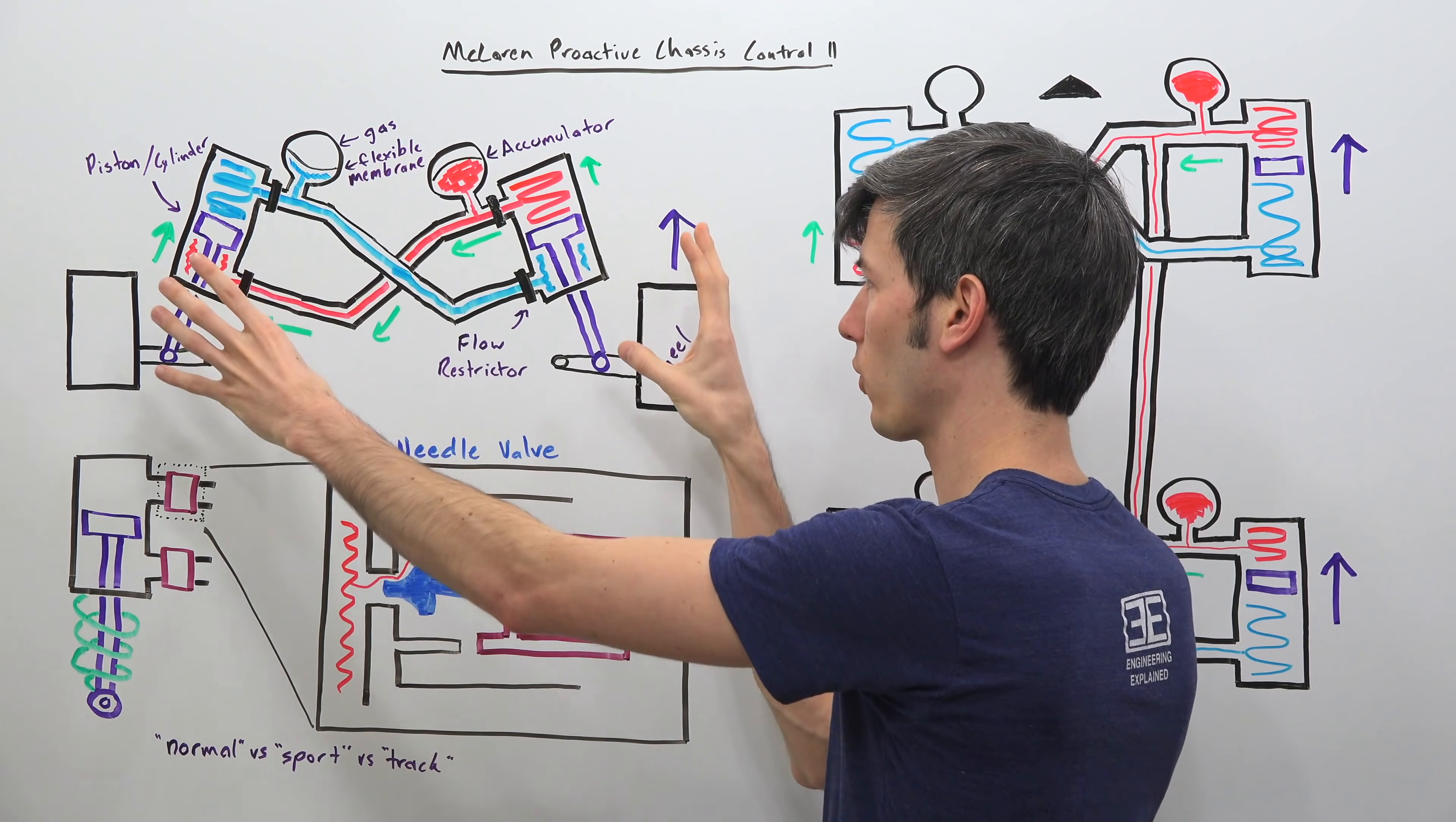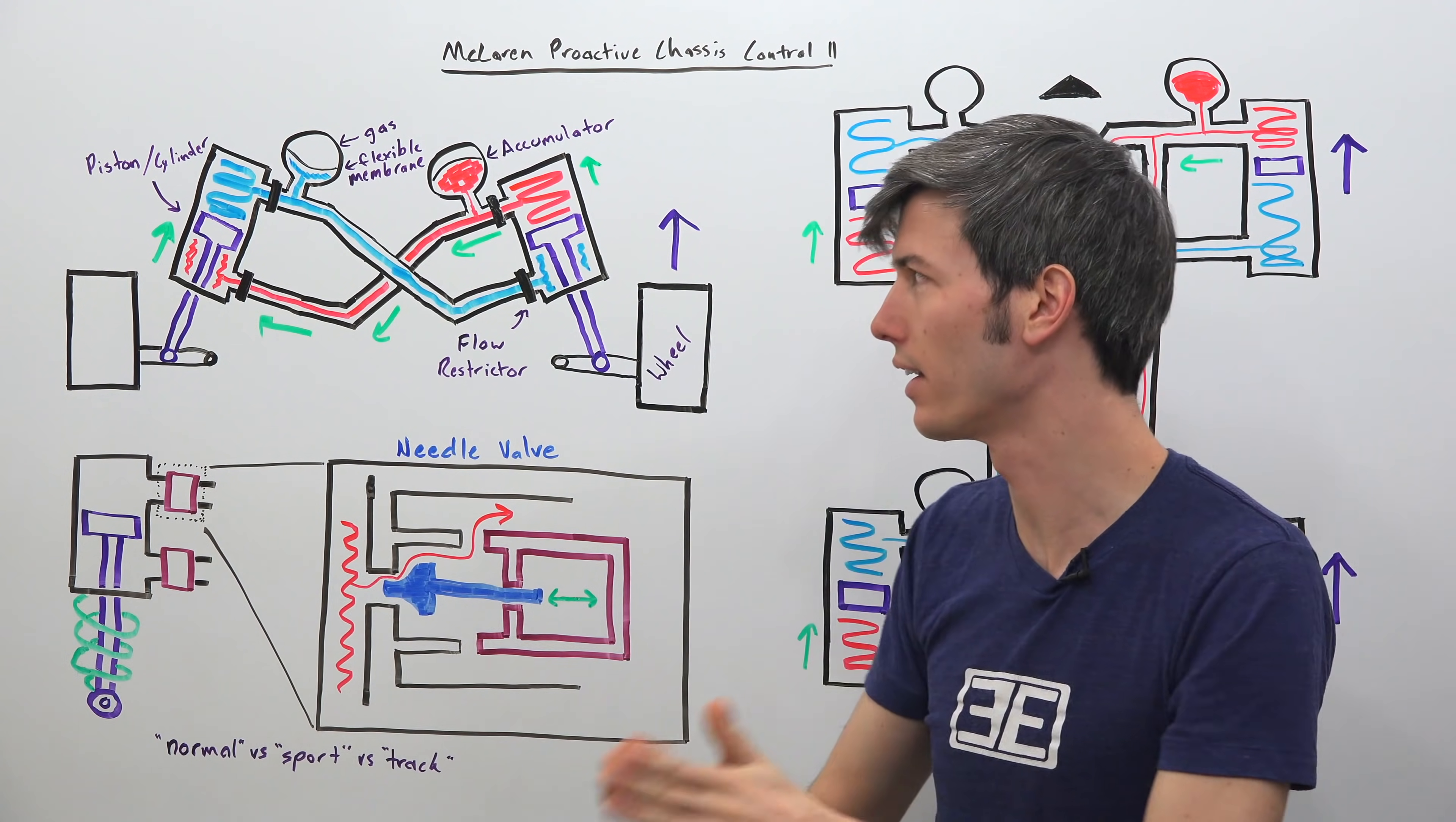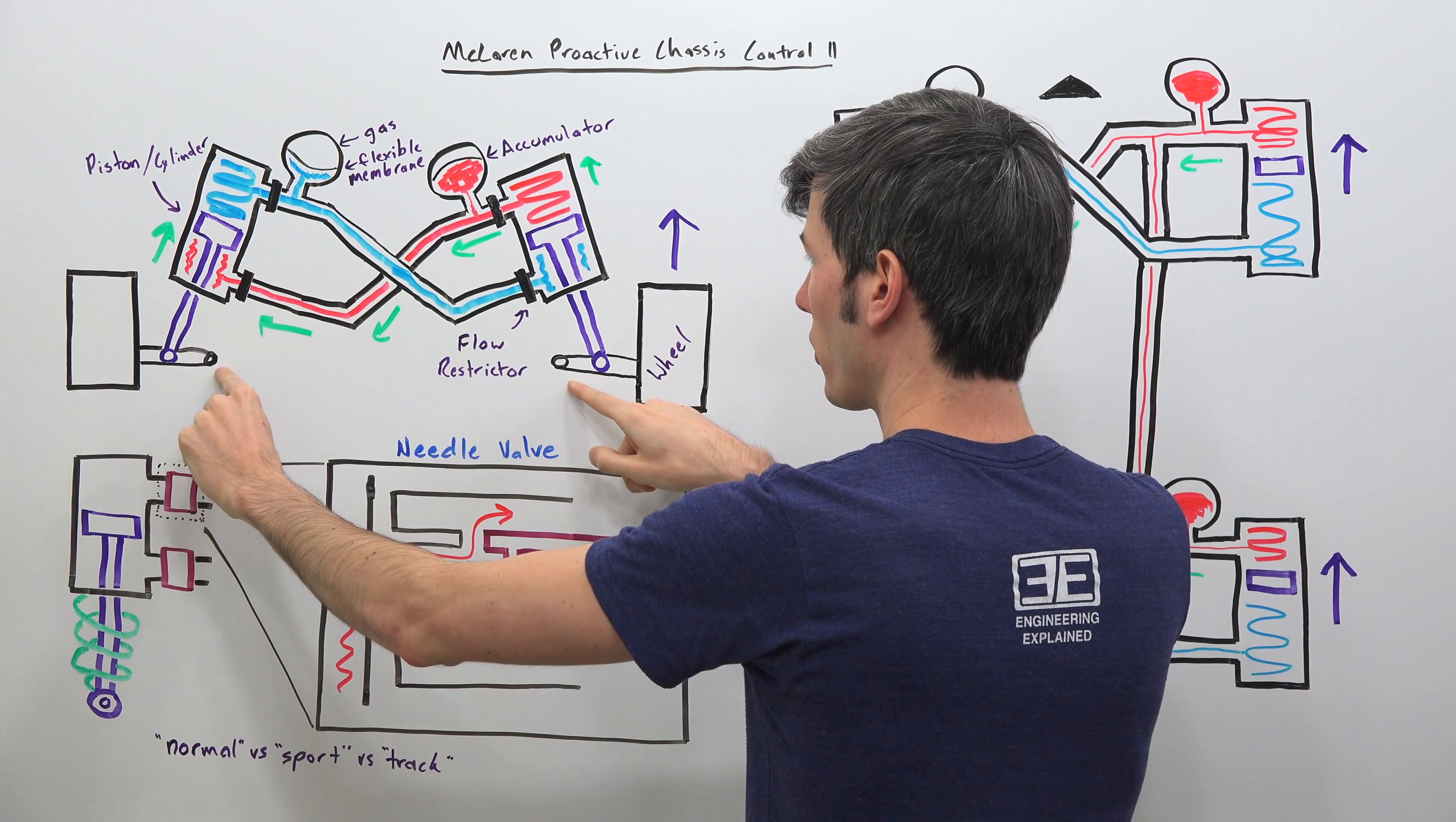Alright so first let's get a general idea of all of the components involved to understand how the system works. Looking at just one axle and then we will apply what we have learned to the entire car and look at how both the front and the rear axle are connected. So here on the left what we have here's our basic setup so you've got your two wheels right here, they're connected to these lower control arms.